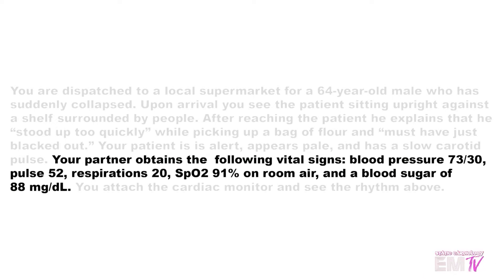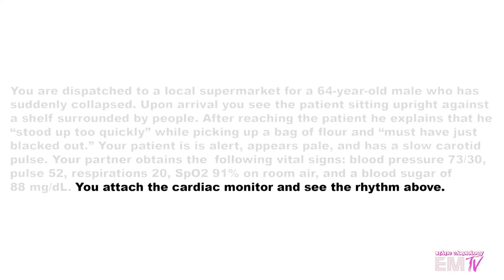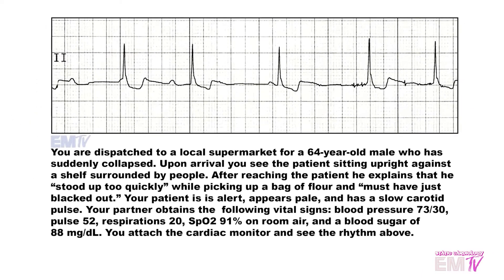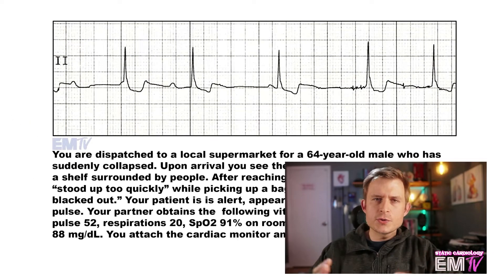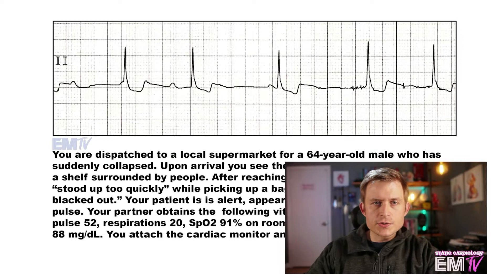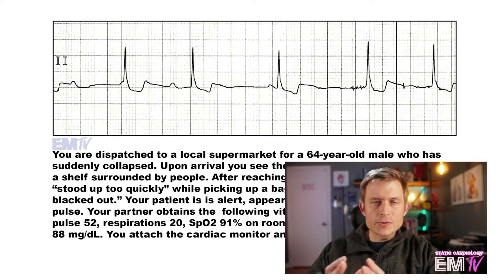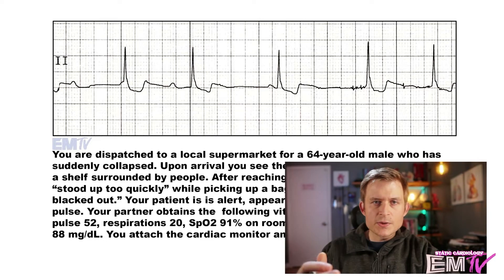Blood pressure 73 over 30, pulse 52, respirations 20, SpO2 91% on room air, and a blood sugar of 88. You attach the cardiac monitor and see the rhythm above. Now, as the majority of your points in Static Cardiology are actually scored with correct treatment, you must first identify whether or not this rhythm is stable or unstable so we can proceed down the correct ACLS algorithm.